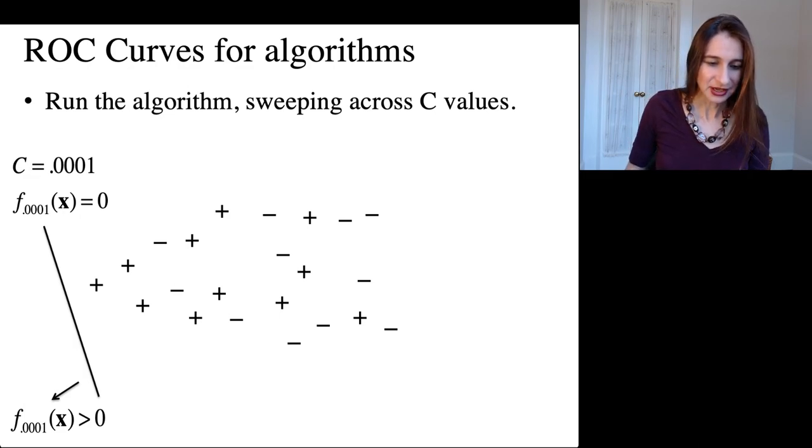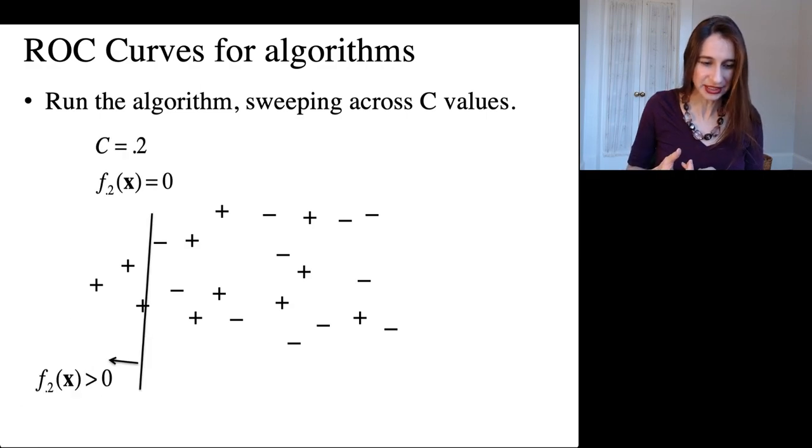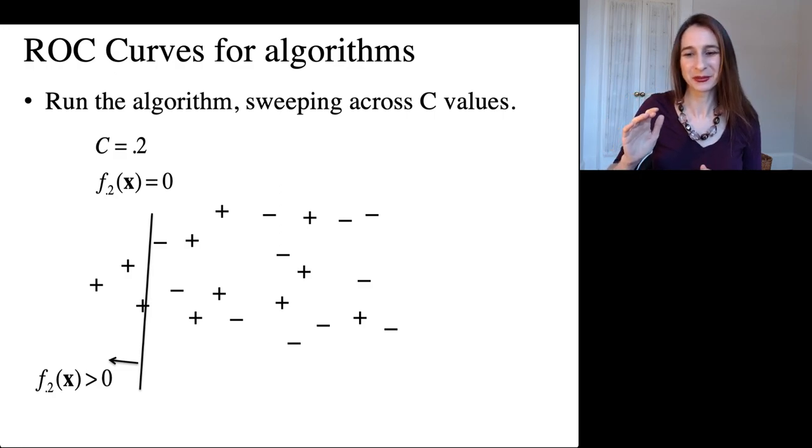So now I'm going to just adjust the value of C. And so now it's 0.2. So here, well, the positives are worth something. So at least it gets a few positives right, but it refuses to get any negatives wrong.